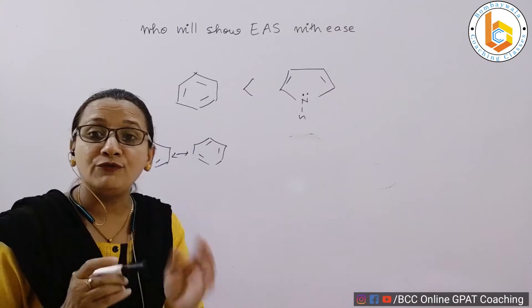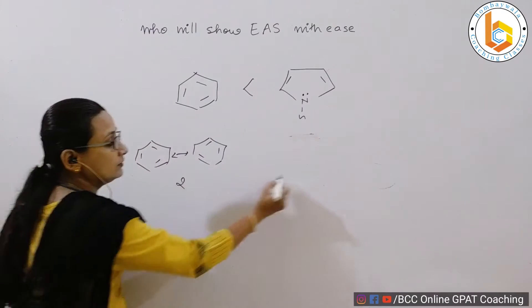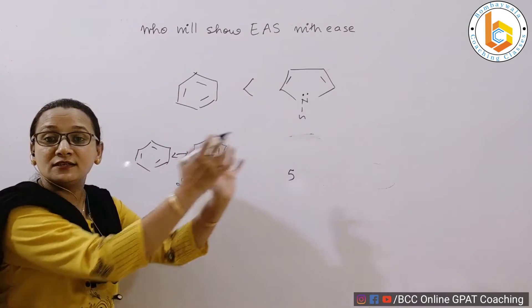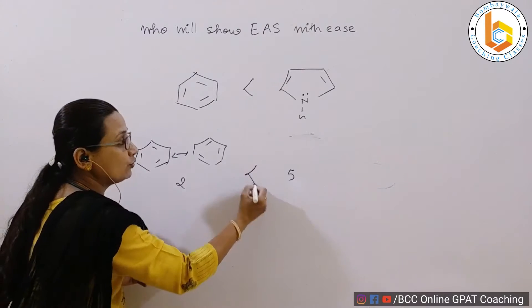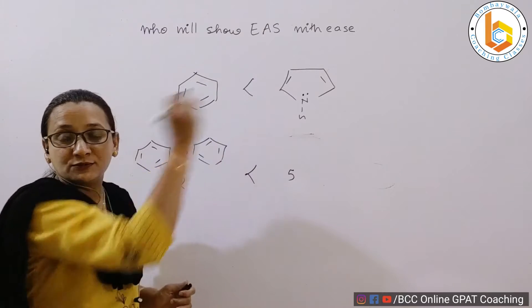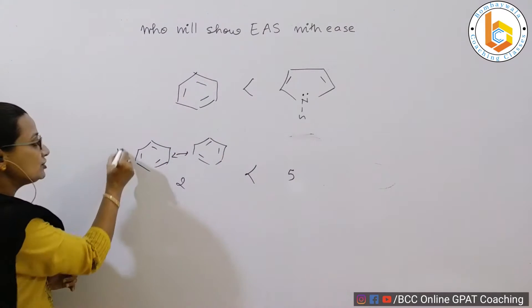So greater the number of resonating forms, this is two, this is five. Greater is the stability of pyrrole and hence greater chance that pyrrole will show electrophilic aromatic substitution. This is one justification.